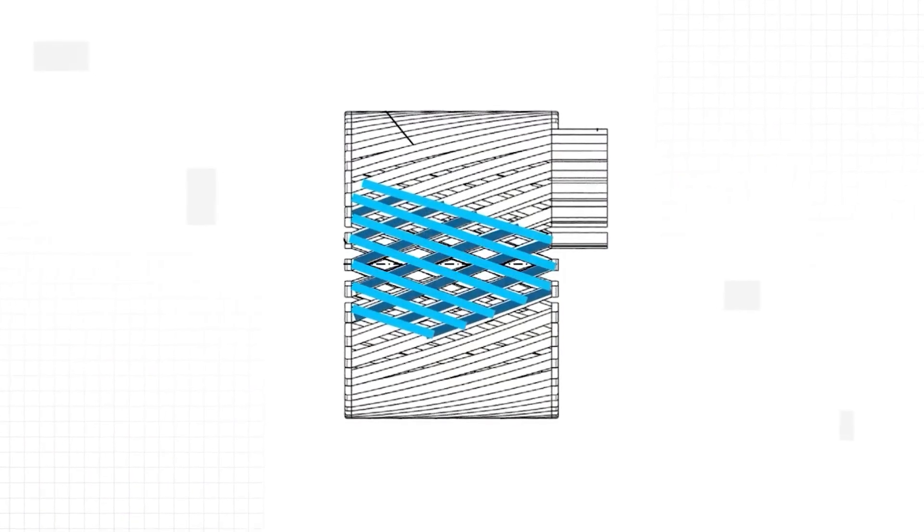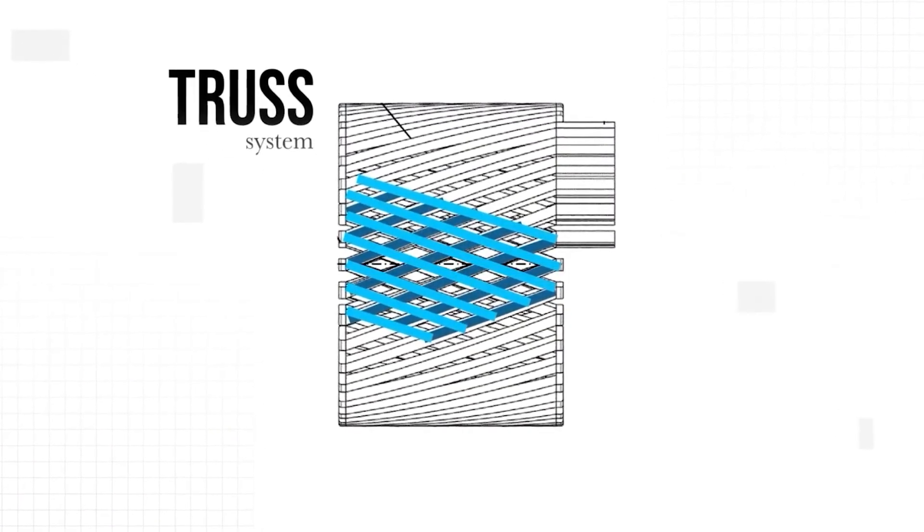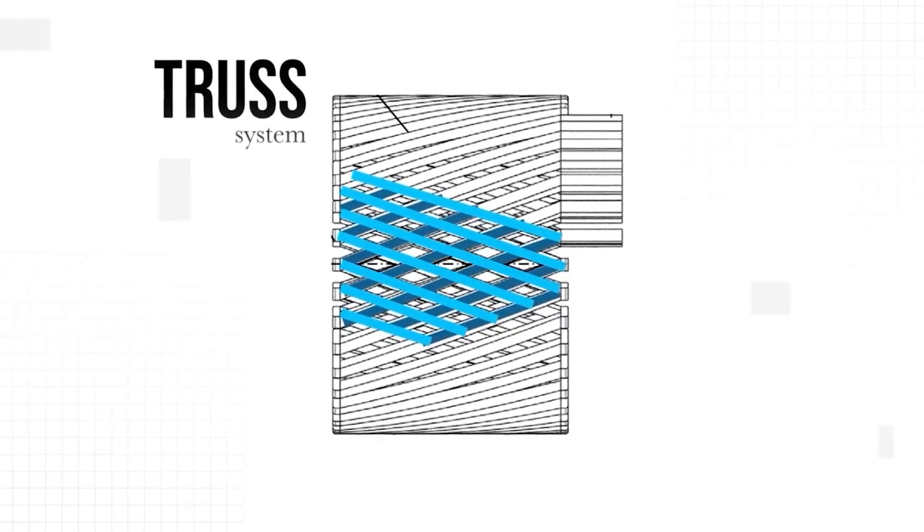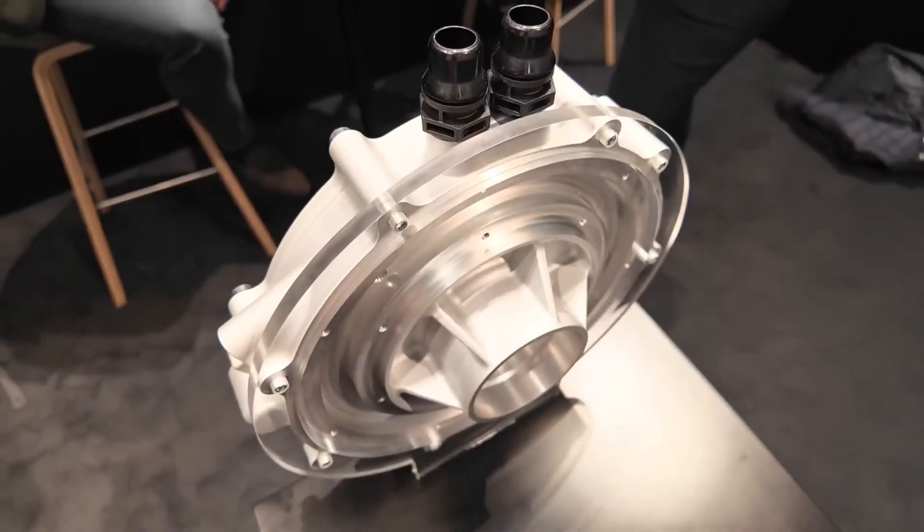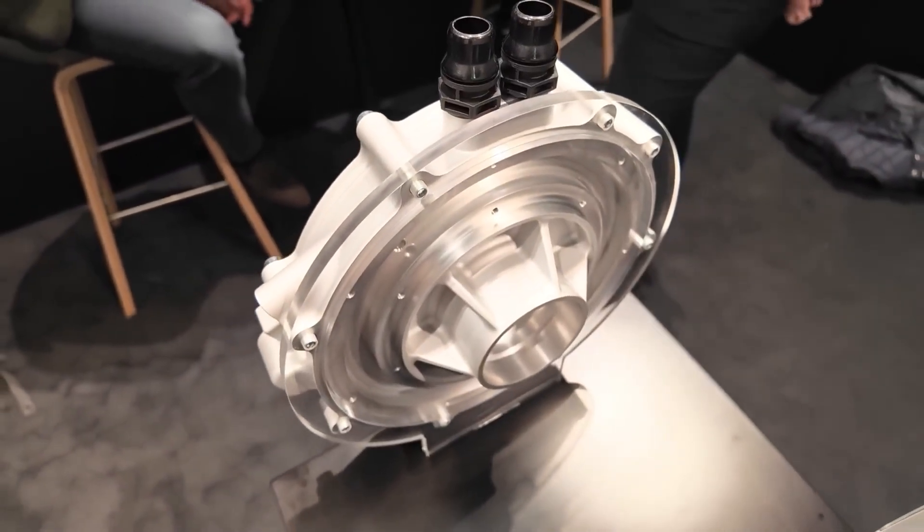When magnets pull at the copper, the truss geometry channels the forces evenly through the structure, instead of letting the bars bend or twist. This makes the stator extremely stable even without a yoke.